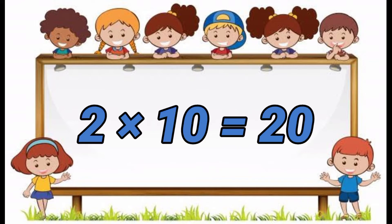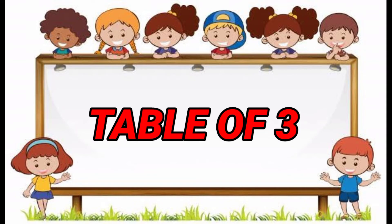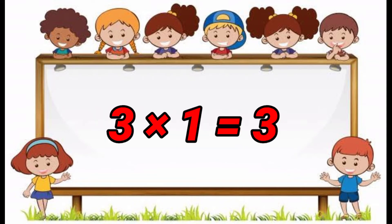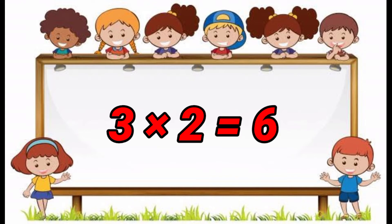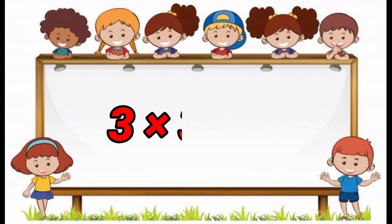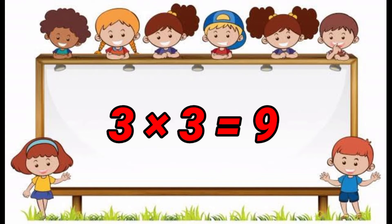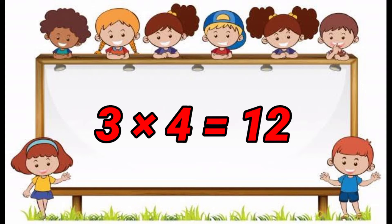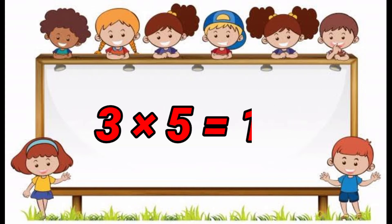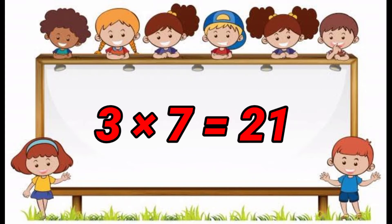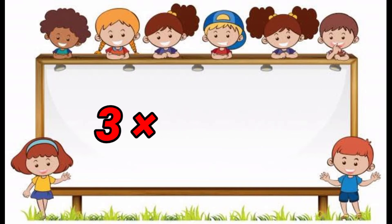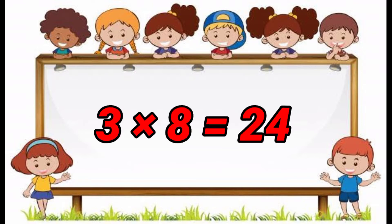2 10's are 20. Table of 3. 3 1's are 3. 3 2's are 6. 3 3's are 9. 3 4's are 12. 3 5's are 15. 3 6's are 18. 3 7's are 21. 3 8's are 24. 3 9's are 27.